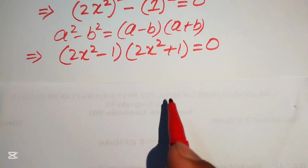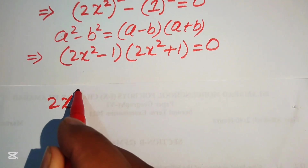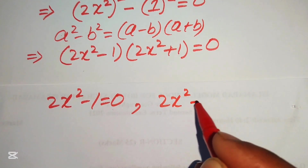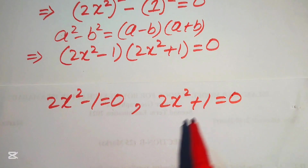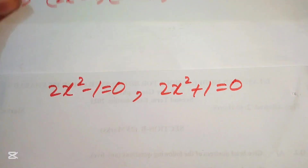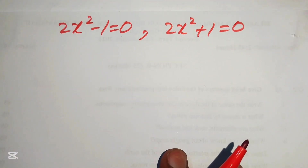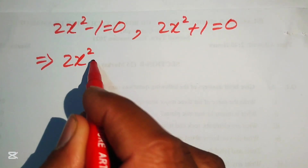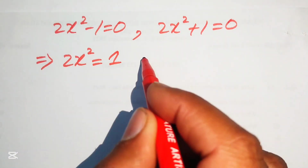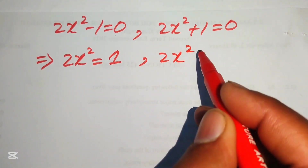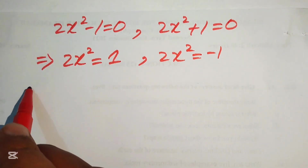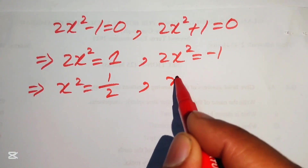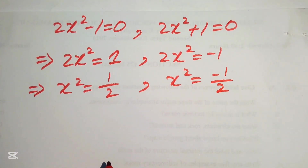This gives two cases: Case 1: 2x² - 1 = 0, so 2x² = 1, giving x² = 1/2. Case 2: 2x² + 1 = 0, so 2x² = -1, giving x² = -1/2.